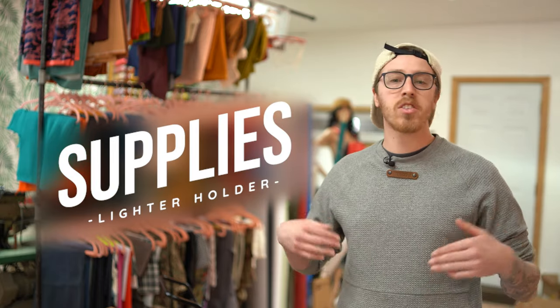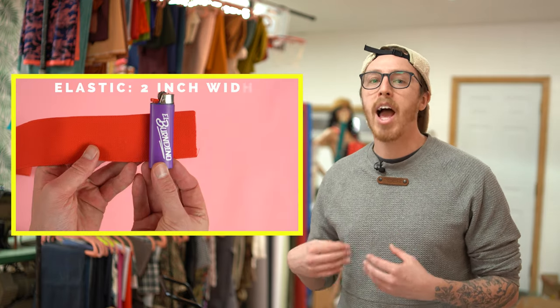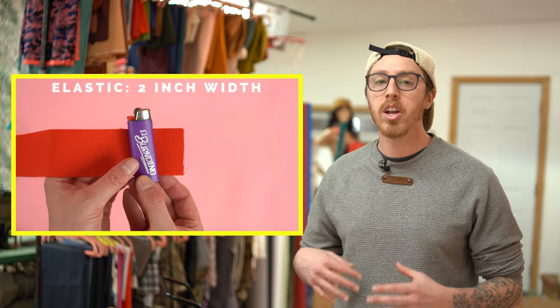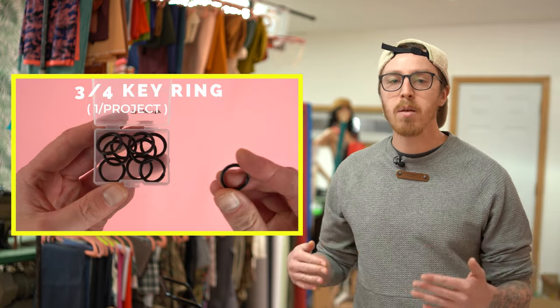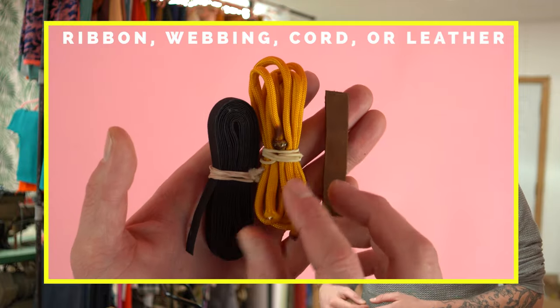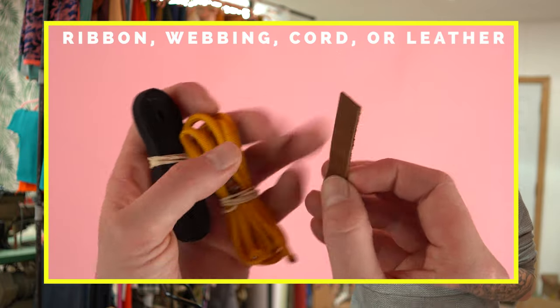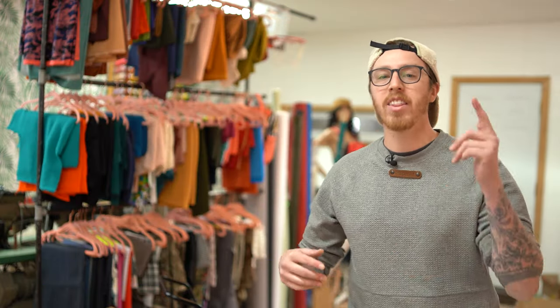The supplies for the lighter holder are similar to the chapstick holder but you can actually use a wider elastic. And we're gonna utilize a secondary fabric and this is gonna be your two inch elastic. You'll need one key ring, same size as the wallet, and lastly your ribbon, webbing, leather, or cord to hold it on with. So cut out your pattern and let's get started.